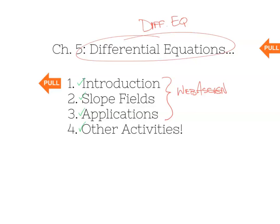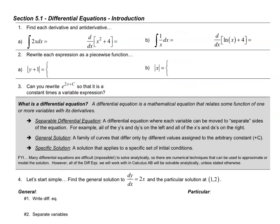Let's jump right into the first page of the notes for Differential Equations. The first three questions are just review slash foreshadowing. The first one says find each derivative and antiderivative. What I hope you notice is some relationships: the antiderivative of 2x is x squared plus C, and the derivative of x squared plus some constant is 2x. Similarly, the antiderivative of 1 over x dx is the natural log of the absolute value of x plus some constant, and the derivative of that is just 1 over x. We'll need to keep that relationship in mind as we start working with differential equations.